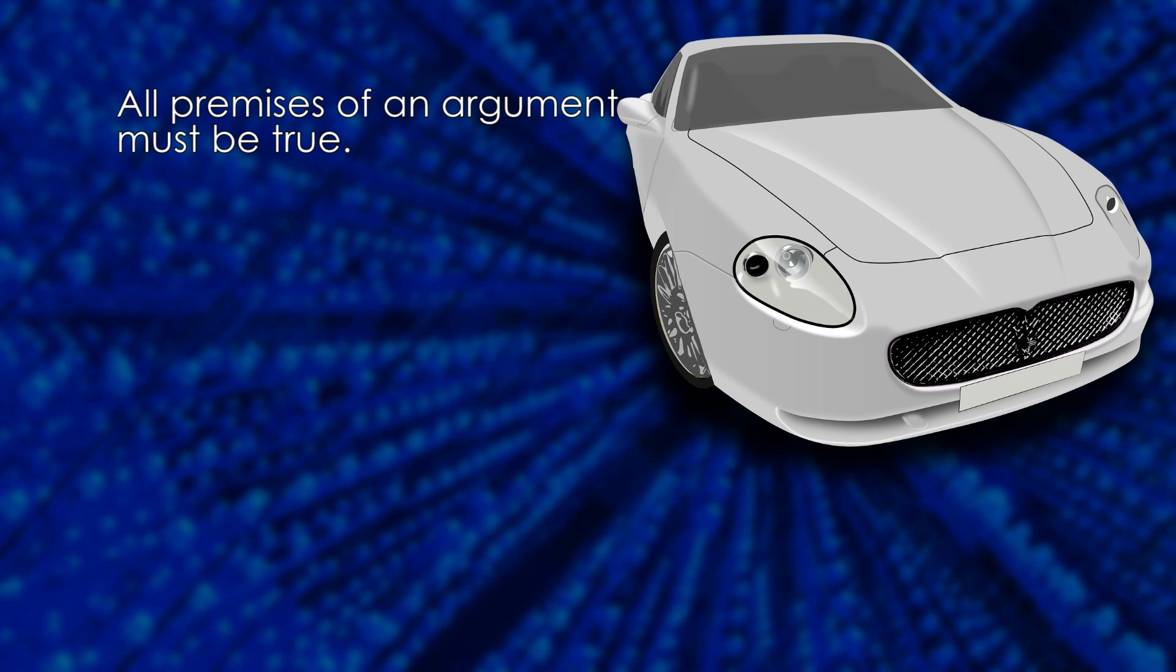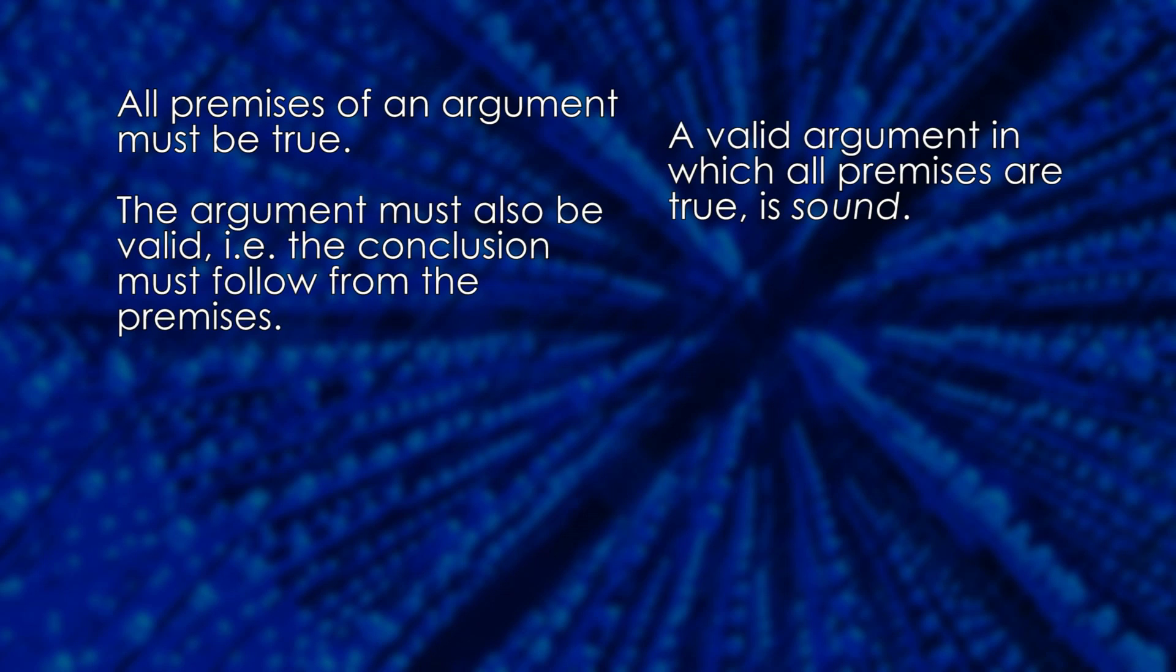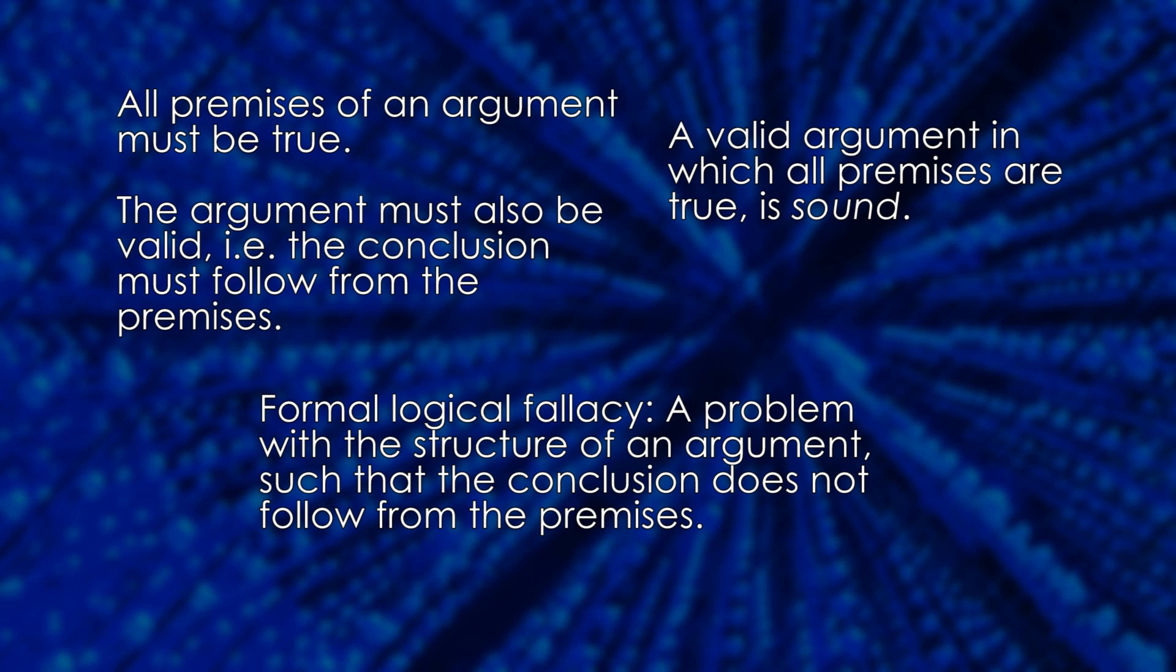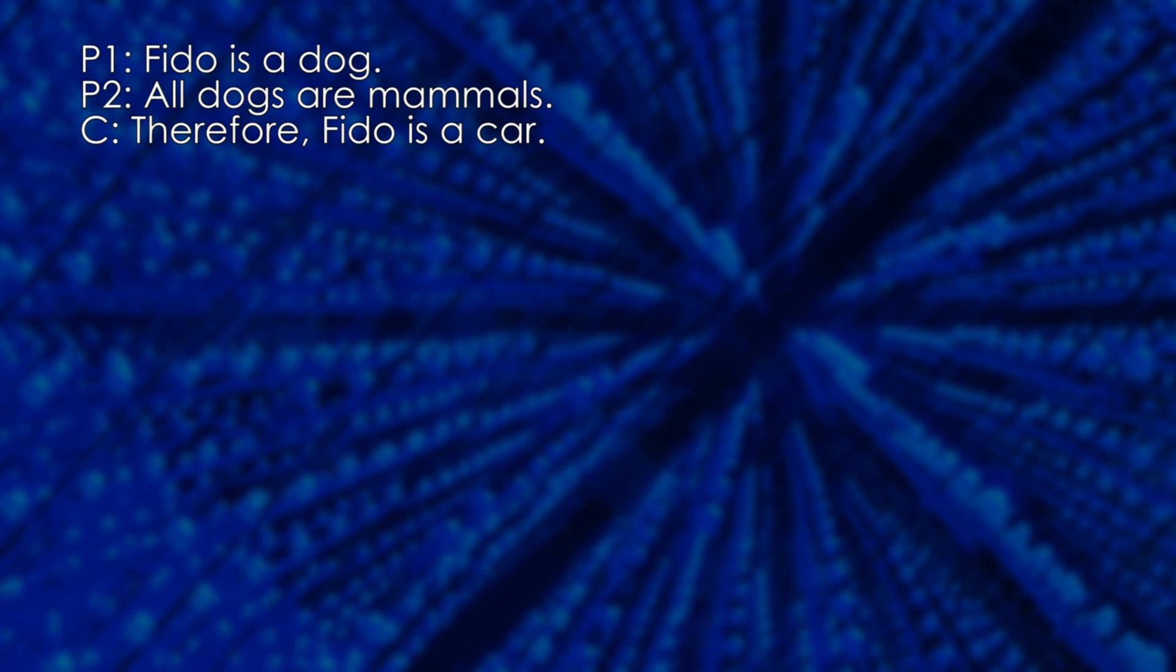In order for an argument to work, it must be sound, meaning that all premises must be true, and it also has to be valid. Problems with the logic of an argument are called formal logical fallacies, and common fallacies have been given names so that it becomes easy to point them out. The fallacy in this argument is called non sequitur, which is Latin for does not follow. It's also known as the generic fallacy.